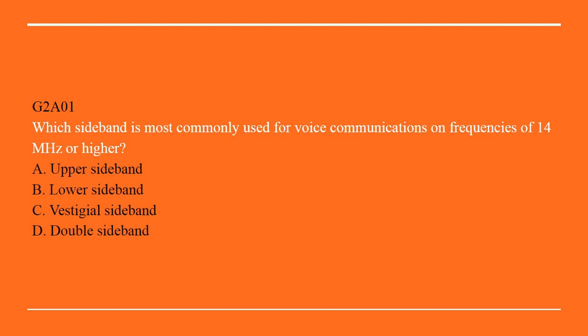G2A01: Which sideband is most commonly used for voice communications on frequencies of 14 MHz or higher? A. Upper sideband. B. Lower sideband. C. Vestigial sideband. Or D. Double sideband. Correct answer here is going to be A: Upper sideband.